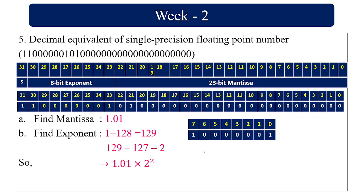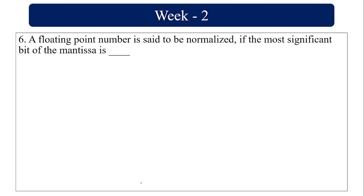So 1.01 into 2 power 2 can be written as 101 into 2 power 0. The sign bit is 1, so the value is negative. 101 in decimal is 5, so the answer is minus 5.0. A floating point number is said to be normalized if the most significant bit of the mantissa is always 1.